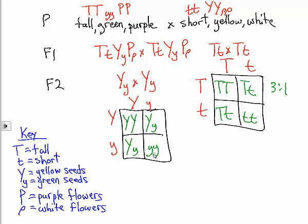So if we really want to know, let's say for example, what is the probability of getting a short plant with green seeds and purple flowers if we bred these two parents, we can write each separate probability and then multiply the individual probabilities together.